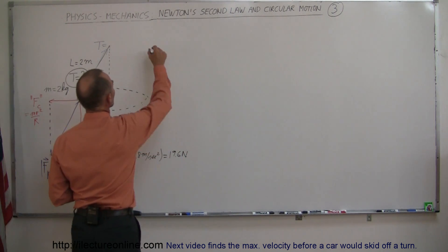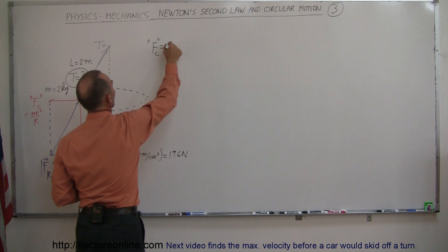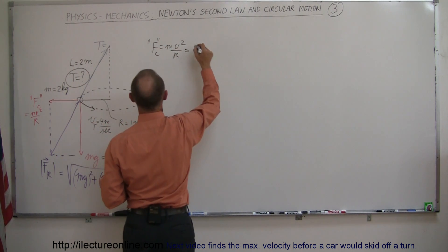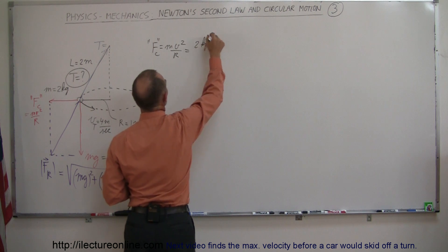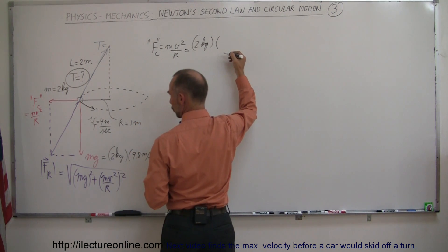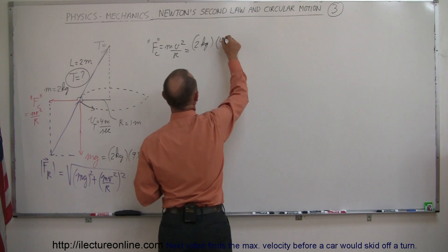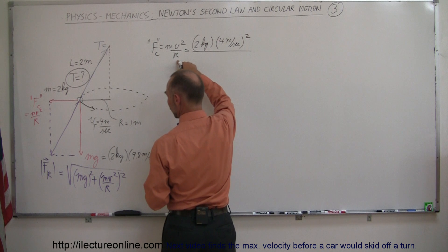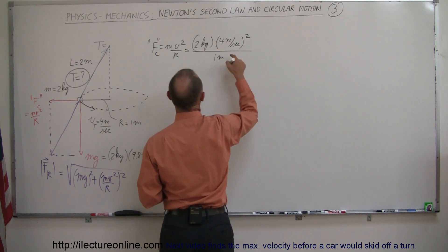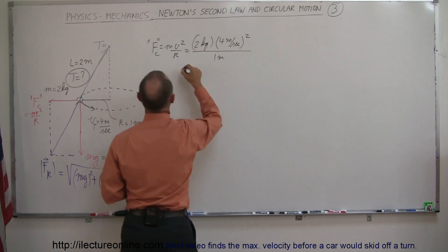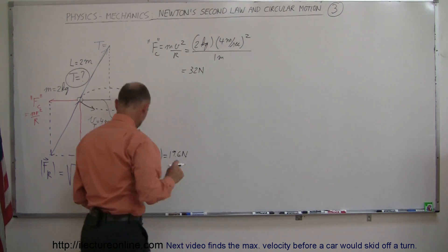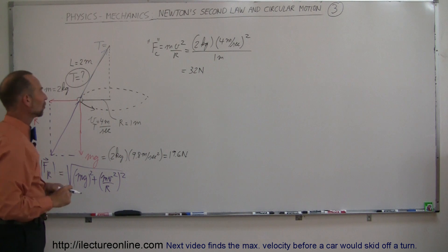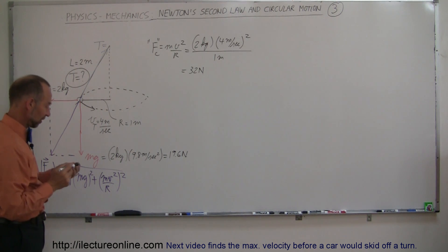Now for the centrifugal force, F_c equals mv squared over r, which equals 2 kilograms times 4 meters per second squared, divided by the radius of 1 meter. That's 16 times 2, which equals 32 newtons. I didn't draw it to scale—I made mg longer than the centrifugal force—but that's just for reference.